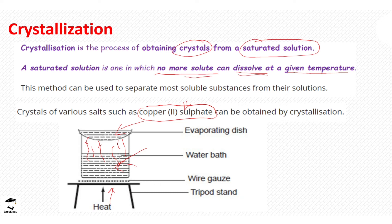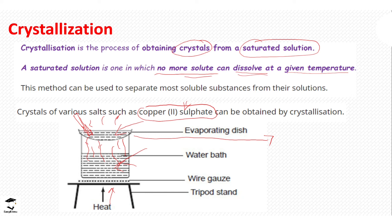The copper sulfate solution is heated and water begins to evaporate. At some point you dip a glass rod into the solution, then remove it and check if any crystals have started to form on the glass rod. If crystals have started forming on the glass rod, we stop the heating process. We then remove our evaporating dish with the remaining solution and allow it to cool slowly.